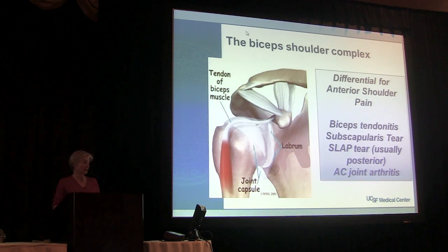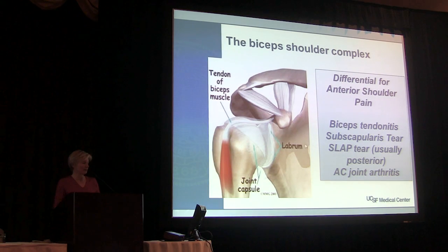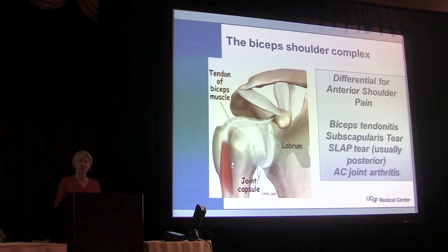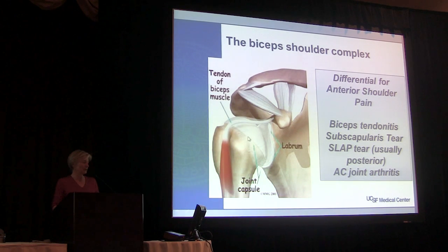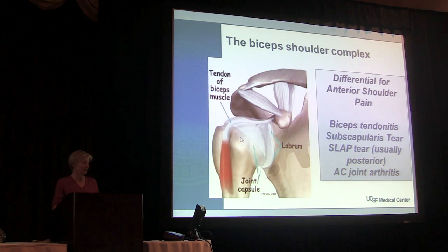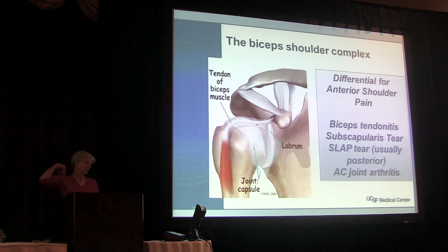Anterior shoulder pain has multiple possible causes: the long head of the biceps in the bicipital groove, the subscapularis tendon in the front. Physical exam should sort out whether the patient has subscapularis weakness. He's younger and without trauma, so the likelihood of a cuff tear is lower. It could be a superior labral tear — which often causes pain on the joint line in the front — or it could be AC joint arthritis, but that's on the top of the shoulder.